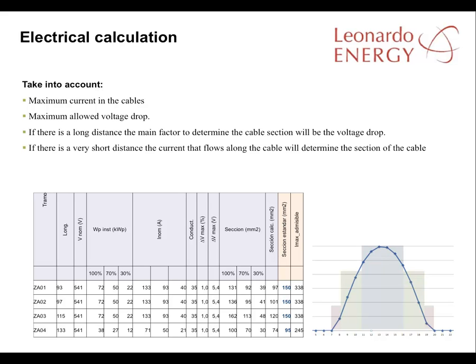In calculating electrical issues, it's very important to take account of the maximum current in the cables and the maximum allowed voltage drop. If the cables cover a long distance, the main factor to determine the cable section will be the voltage drop. But if the cable covers a very short distance, the current that flows along the cable will determine the section of the cable.